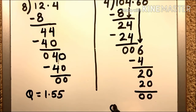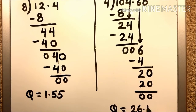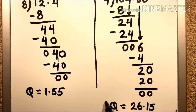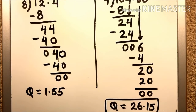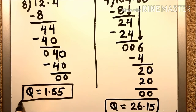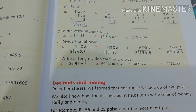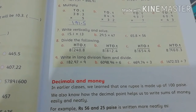Bring down the next digit, which is 0, making 20. 4 fives are 20; 20 minus 20, remainder 0. So the answer we get is 26.15.